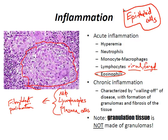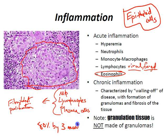Progressive contracture of the wound occurs, and wound healing strength will top out at about 80% by three months.